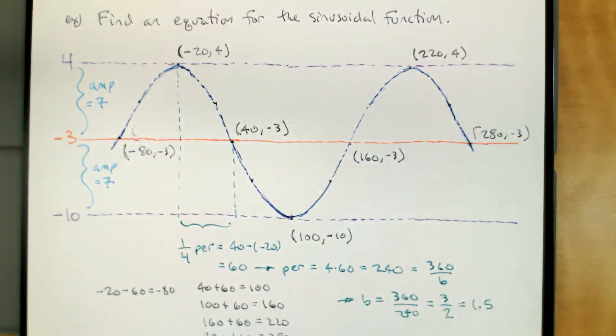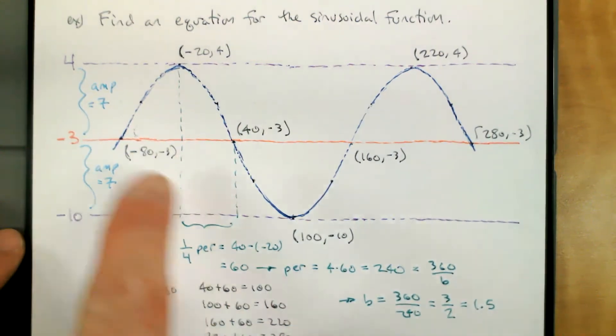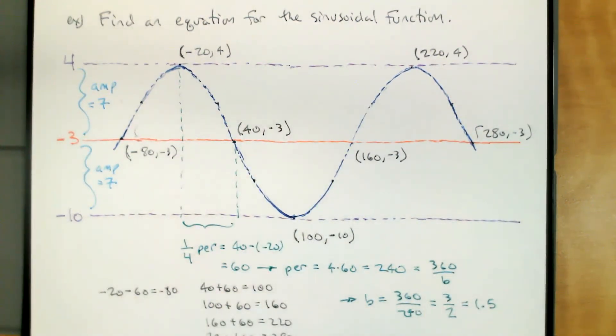So now we've got the coefficient of x. I've got the amplitude, the middle, the coefficient of x. The last thing that we need to do is figure out what point we're going to start at. That will tell us two things, what the horizontal shift is, and what trig function we're using. So let's suppose that I choose this negative 20, 4. If I start at negative 20, 4, then I'm starting at the top, which means positive cosine, and my C is negative 20.